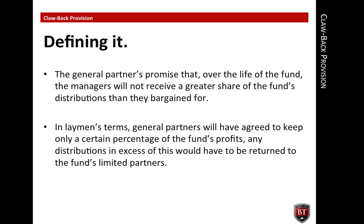Most limited partnership agreements for private equity funds have two separate clawback components: the limited partner clawback and the general partner clawback. General partner clawback provisions can require the general partner to return distributions if any of the following conditions hold true: if a limited partner has not received their preferred return, the general partner has received carried interest in excess of the contractual rate, or a limited partner has not received its catch-up period share of profits. A limited partner clawback operates in a similar manner but will clawback funds from the limited partners instead of the general partners.